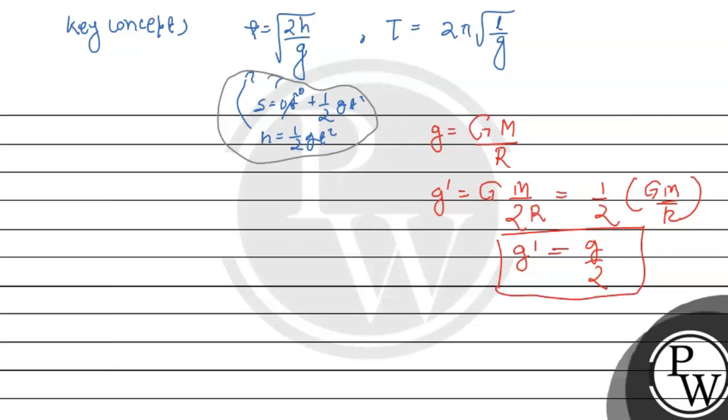the gravity on the other planet will be g' equals GM divided by 2 times R squared, which equals g divided by 2.